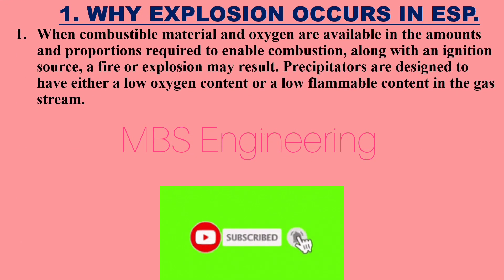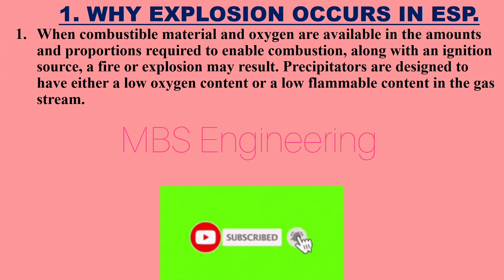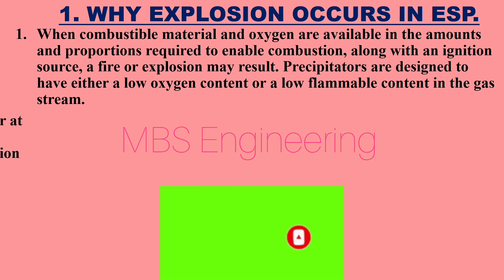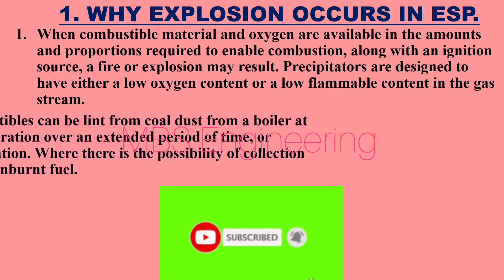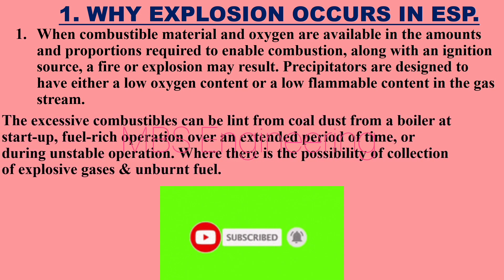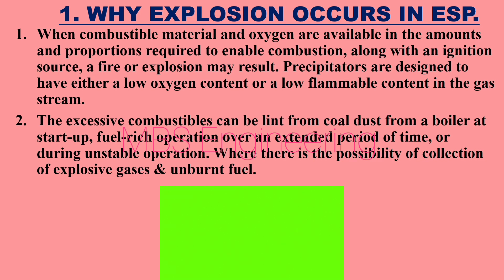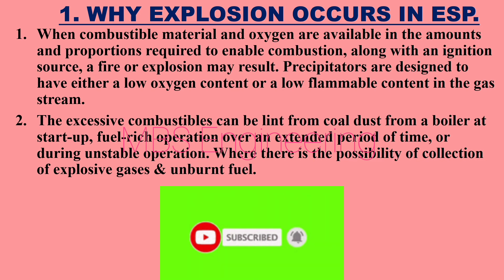Point 1: When combustible material and oxygen are available in the amounts and proportions required to enable combustion, along with an ignition source, a fire or explosion may result. Precipitators are designed to have either a low oxygen content or a low flammable content in the gas stream. Point 2: Excessive combustibles can be lint or coal dust from a boiler at startup, fuel-rich operation over an extended period of time.